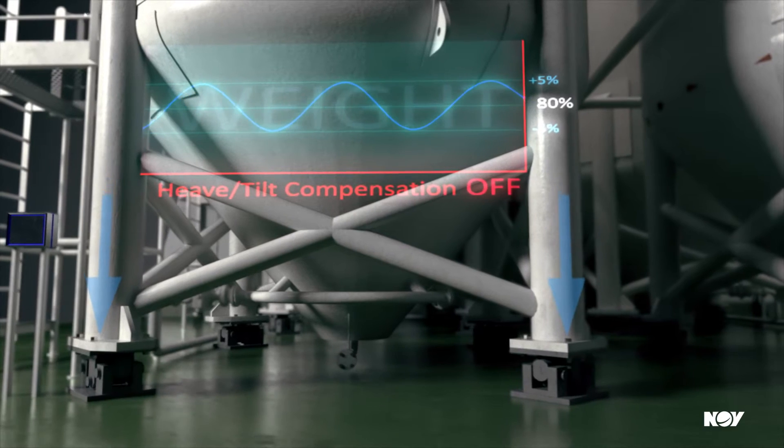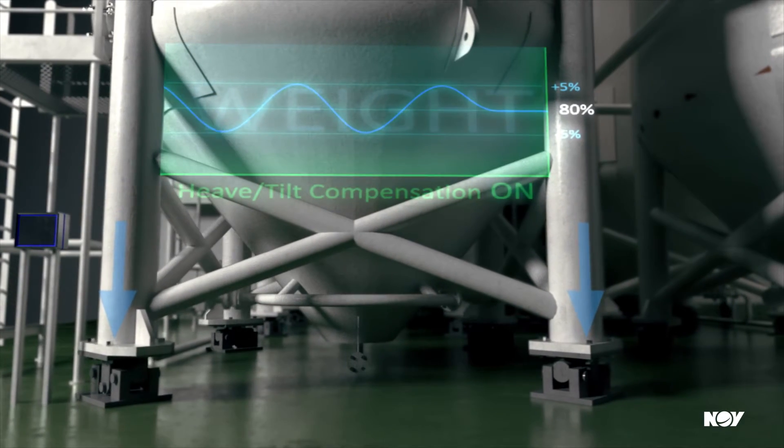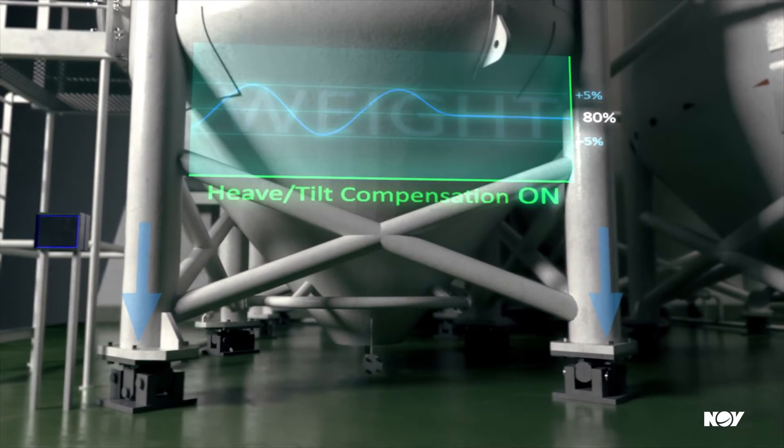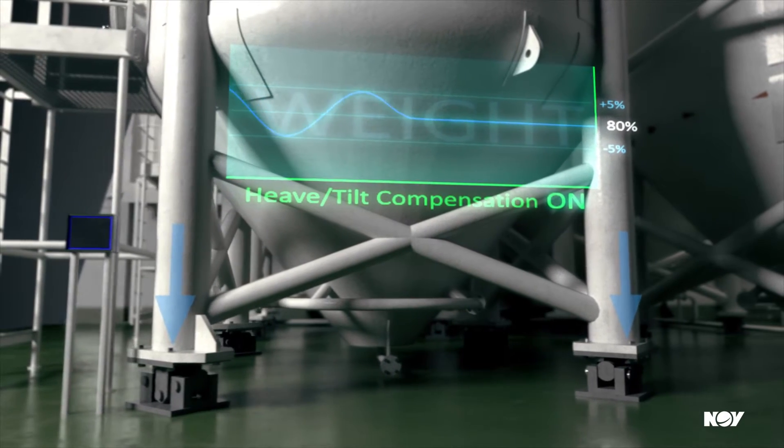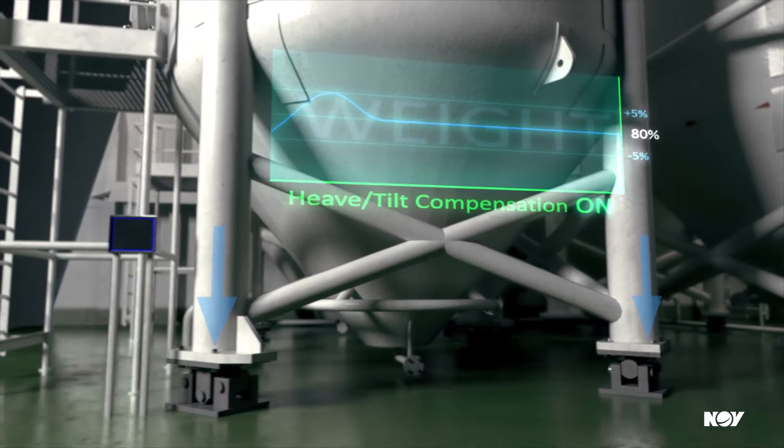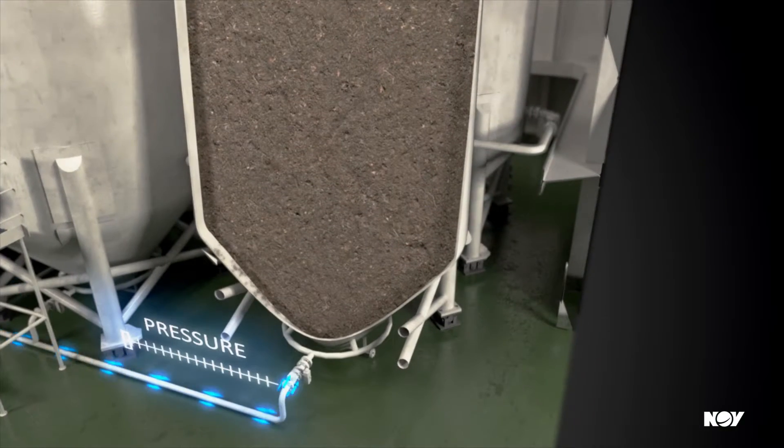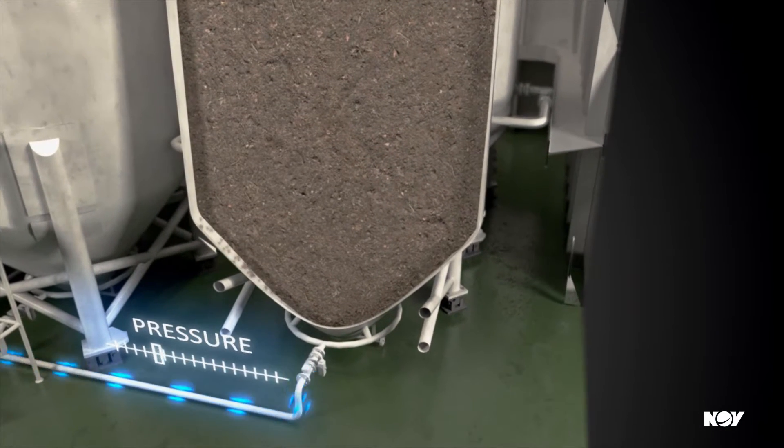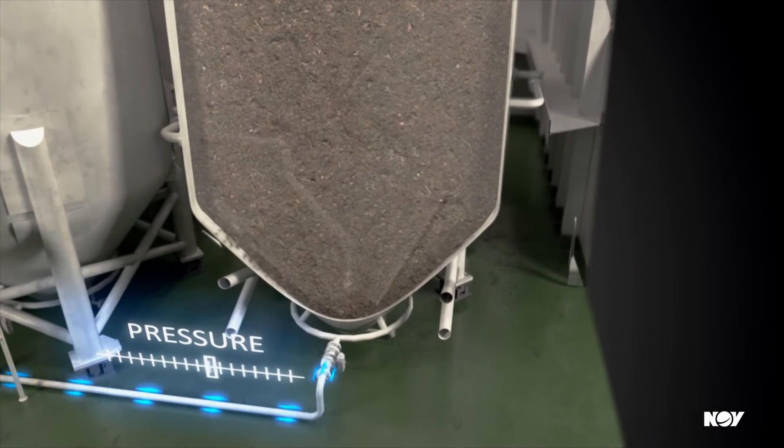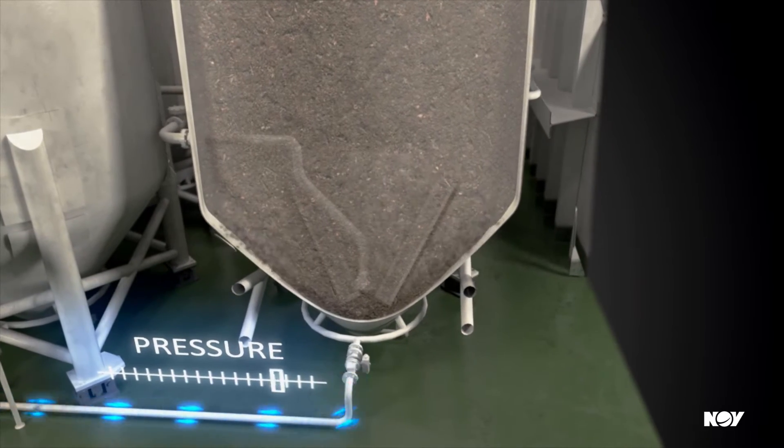The rigs are seldom steady in open sea. A compensation system makes sure that a steady weight is shown in the control system. Storage tanks are pressurized through a canvas which increases transfer rate and ensures efficient emptying.